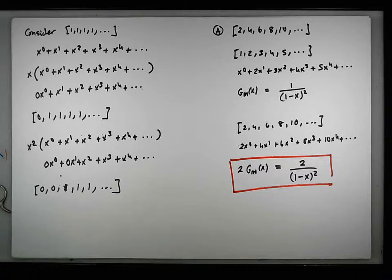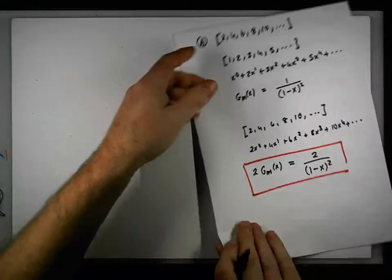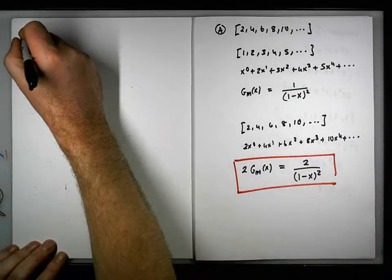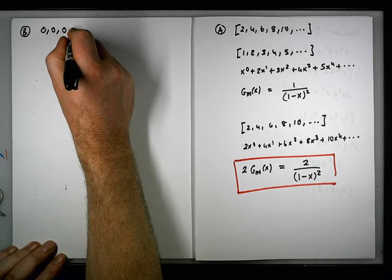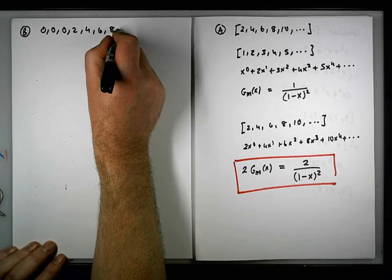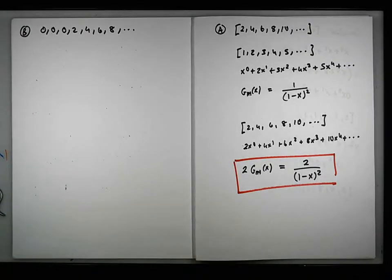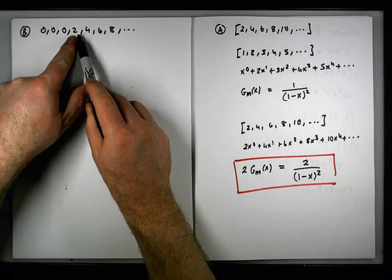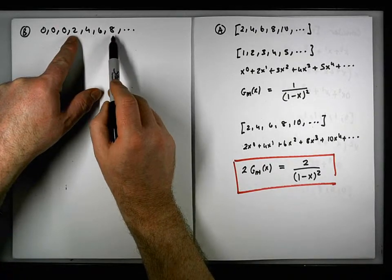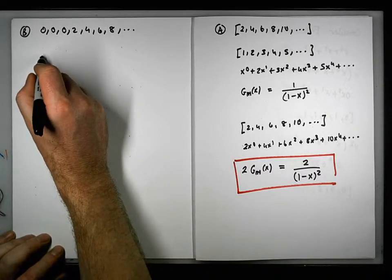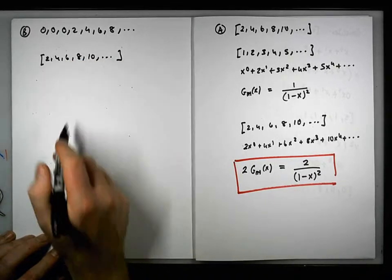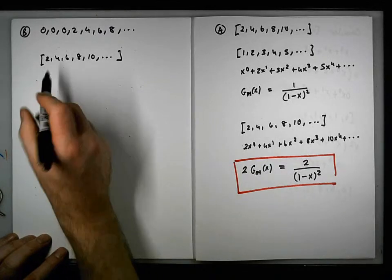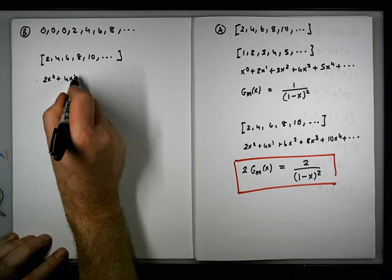Let's look at sequence B. Sequence B is 0, 0, 0, 2, 4, 6, 8, and so on. You can see we have the even natural numbers here. The sequence encoded in there is 2, 4, 6, 8, 10, and so on, which has a power series of two x to the zero plus four x to the one plus six x squared plus eight x cubed plus ten x to the four.